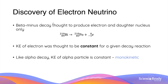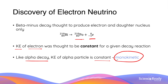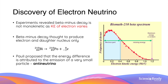Beta-minus decay was originally thought to produce only the electron and the daughter nucleus. However, while the kinetic energy of the beta-minus particle was expected to be constant — monokinetic, as in alpha decay — this was not the case. Experiments involving beta-minus decay showed that the beta particle is not monokinetic, as the kinetic energy of the electron varies.